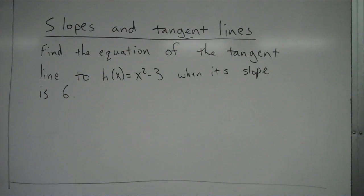So in the previous example, we saw a tangent line problem, but we were given the x value to find the tangent line at. So in this case, we're actually given the slope that we want to use, and we have to now kind of almost work backwards.